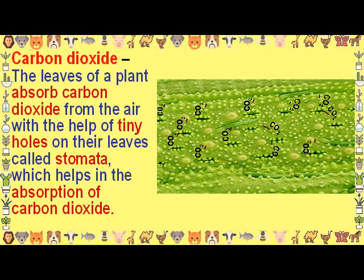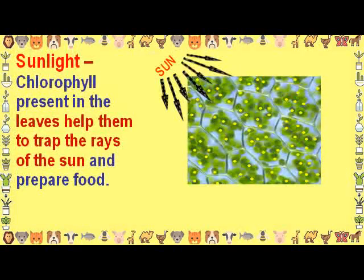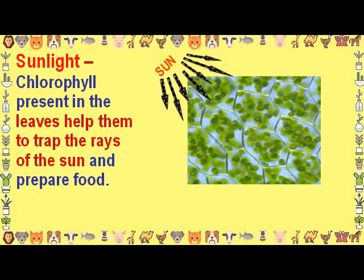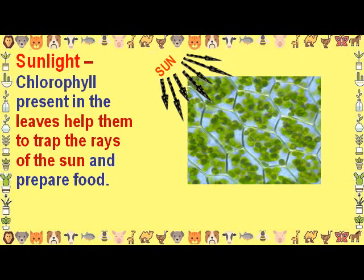Carbon dioxide: the leaves of a plant absorb carbon dioxide from the air with the help of tiny holes on the leaves called stomata, which help in the absorption of carbon dioxide. Chlorophyll present in the leaves also helps them trap the rays of the sun to prepare food.